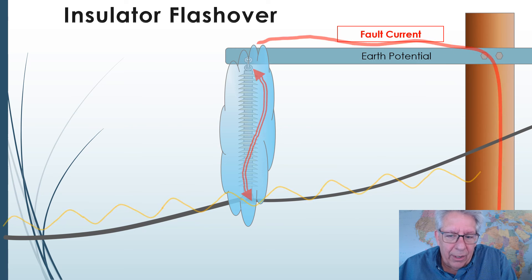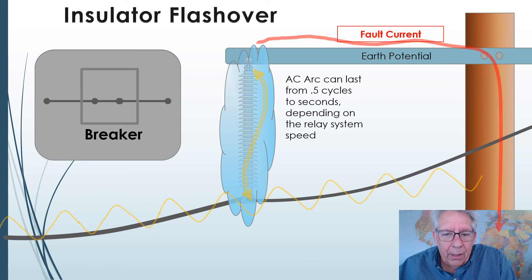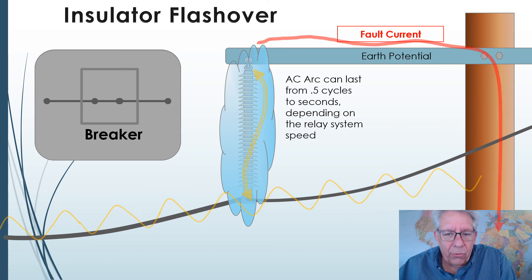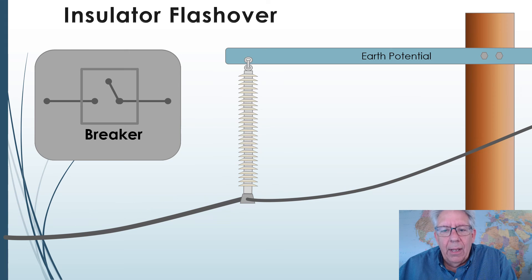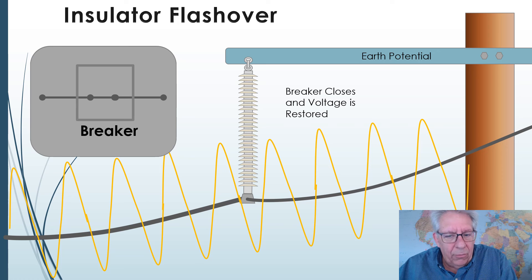Well, it stays like this until the breaker is activated. So when the breaker opens finally, the AC breaker from the source, the current stops flowing and the arc disappears. And then the recloser or the breaker closes and AC voltage is restored back onto the line.